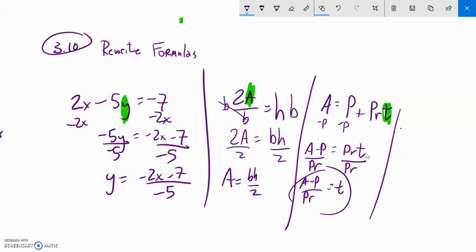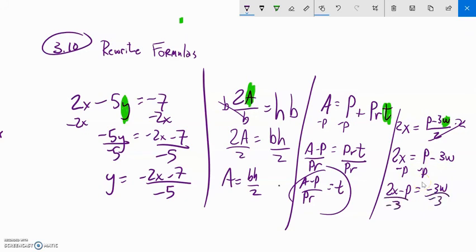One more example. x equals p minus 3w over 2. And we're going to solve, it's already solved for x, so we're going to solve for w. So first thing I'm going to do is get rid of this division. So multiply both sides by 2. 2x equals p minus 3w. So let's subtract p from both sides to undo it. Negative 3w. Not 33. 3w. That's pretty subtle. Notice that subtraction sign is with the 3w. It stays with it. Now I'm going to divide everything by negative 3. And there's my answer. 2x minus p over negative 3 is w.